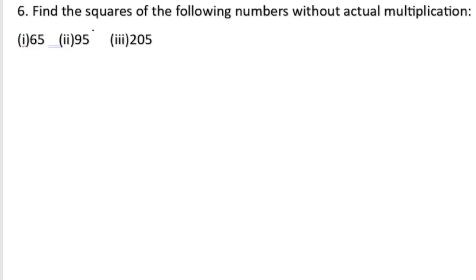Problem 6: Find the squares of the following numbers without actual multiplication. Normally, if you're doing the square of 65, we would multiply 65 into 65. But for this, we don't need to multiply. Without multiplying 65 into 65, we need to solve them. How are we going to do that?